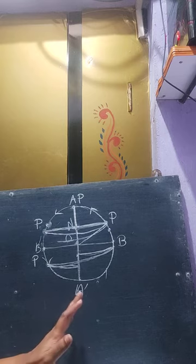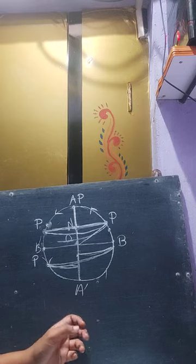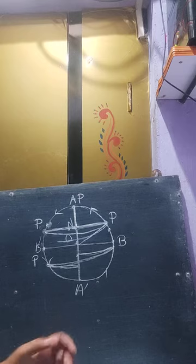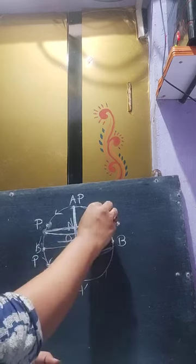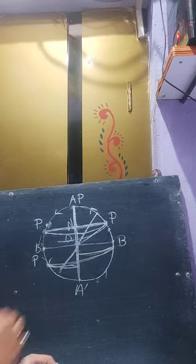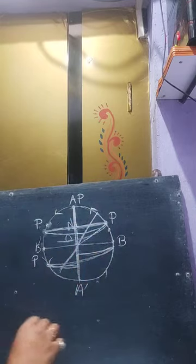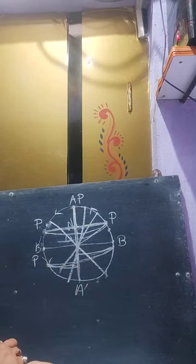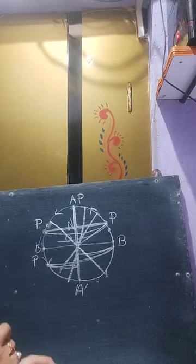The motion of the projection of the particle on any other diameter of the circle of reference will also be simple harmonic motion. If I consider this diameter or this diameter — all of these are diameters of the circle — all of them will show simple harmonic motion. Therefore, SHM may be defined as the motion of the projection of a particle on any diameter of the circle of reference.